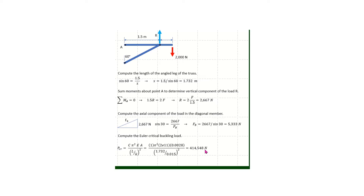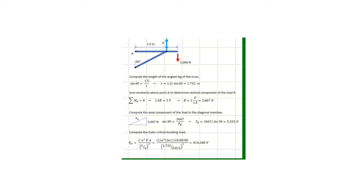The critical buckling load is then computed to be 414,548 newtons. This load may seem high, but remember this is assuming the load and the beam are perfectly aligned. We will now use ANSYS to compute the critical buckling load in the diagonal member.